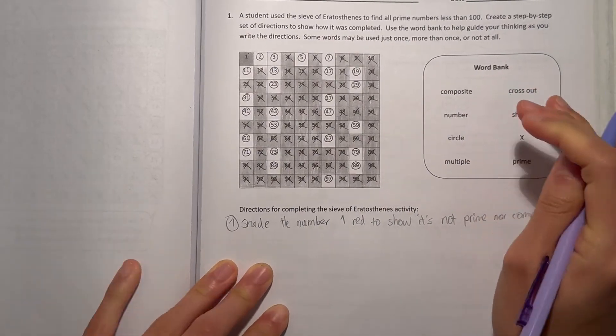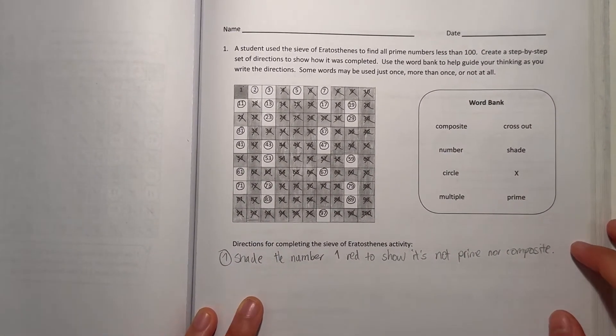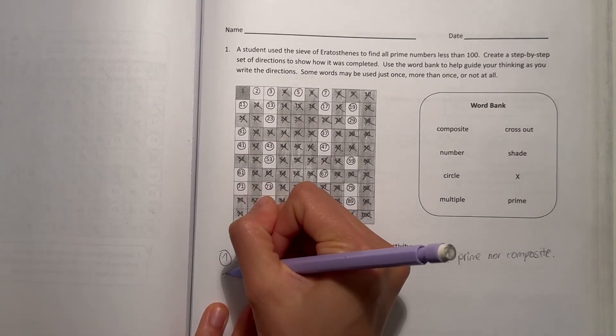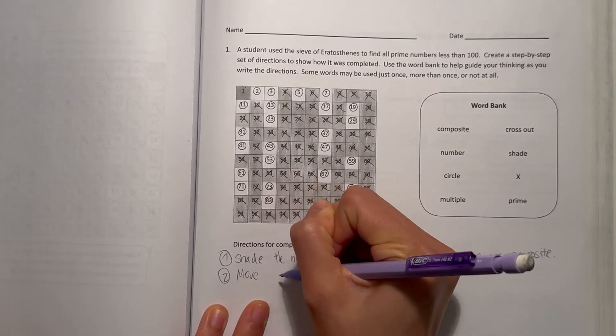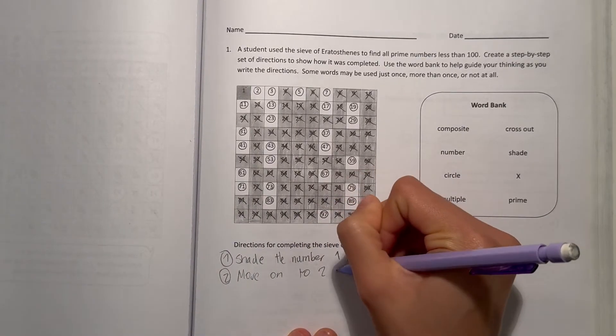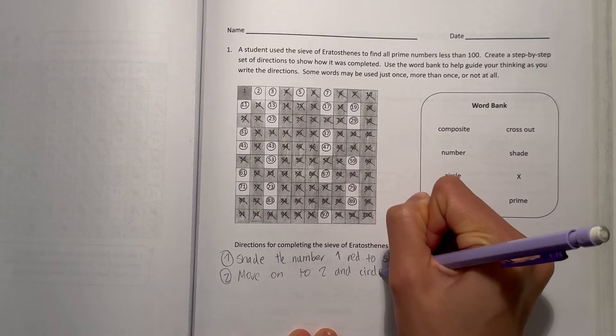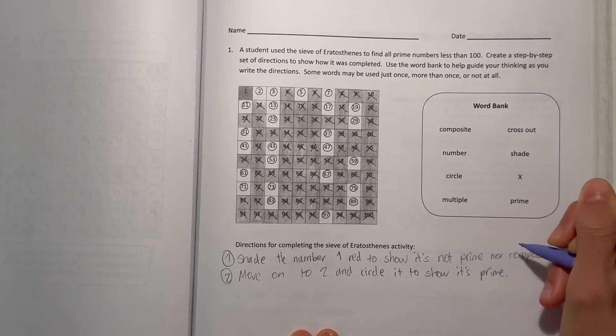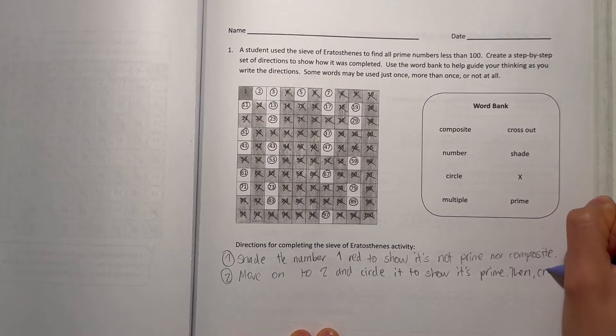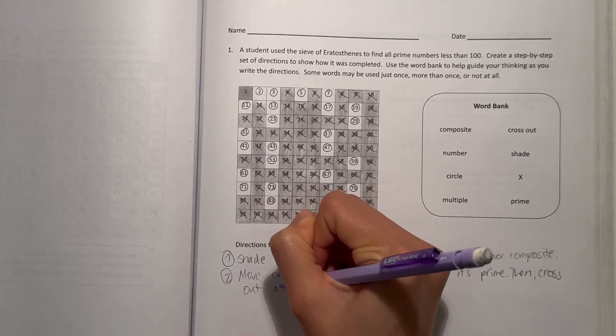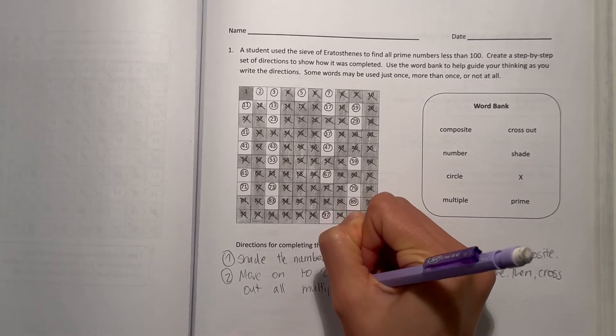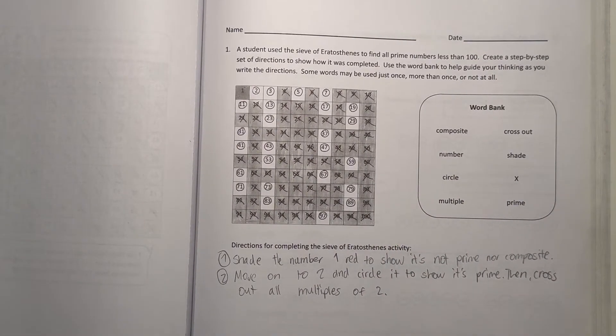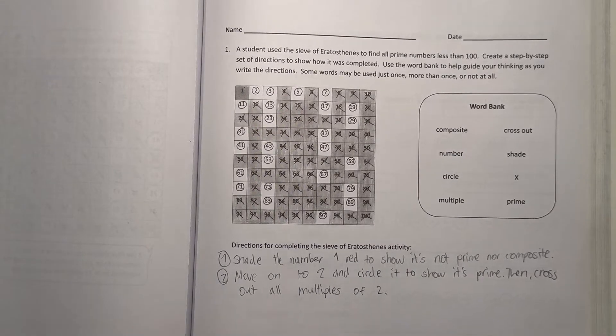So that would be step one. Now step two, after we do that we move on to the next number we see which is two. So two would be a prime number. Step two, move on to two and circle it to show it's prime. And then after that, then cross out all multiples of two. Because all multiples of two would be a composite number because it has at least another factor that's two.